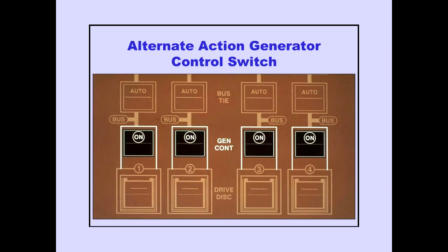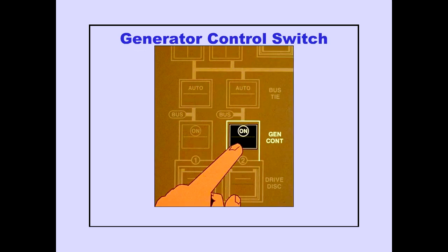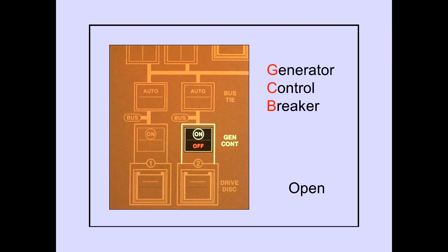An alternate action generator control switch is provided for each generator. Pushing the generator control switch on allows the generator control breaker to close when generator voltage and frequency are acceptable. The generator control breaker connects the generator to its respective AC bus. The amber generator off light illuminates when the generator control breaker is automatically open due to a generator fault, or when the generator control switch is pushed off.